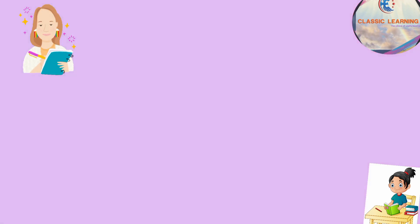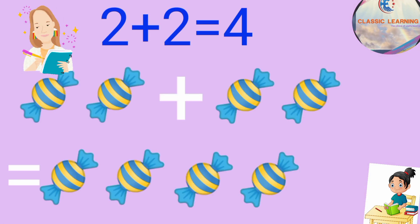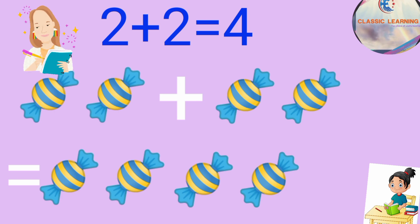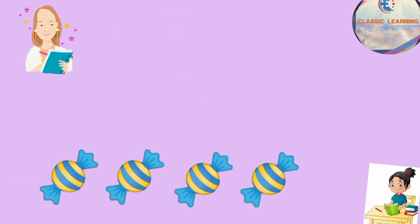Next one: 2 plus 2. You have 2 chocolates, and your sister gave you 2 more chocolates. Total how many chocolates do you have? Count: 1, 2, 3, 4. Total 4 chocolates.